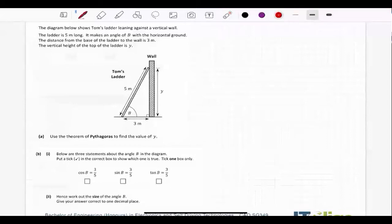So let's have a look at the first question I have here. The diagram below shows Tom's ladder leaning against a vertical wall. The ladder is five metres long. It makes an angle of B with the horizontal ground. The distance from the base of the ladder to the wall is three metres. The vertical height of the top of the ladder is Y. Now, it can be very hard to figure out what the hell is happening from the story. So thankfully, in many cases, they give us a diagram.